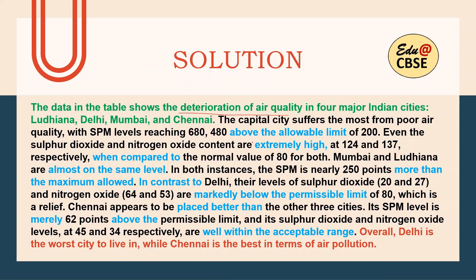Now we come to the body where I'll be comparing and contrasting. As I said, I'll begin from the worst, which is Delhi. Rather than writing 'Delhi,' I'm writing 'the capital city.' The capital city suffers the most from poor air quality with SPM levels reaching 680, which is 480 above the allowable limit of 200. Even the sulfur dioxide and nitrogen dioxide content are extremely high at 124 and 137 respectively, when compared to the normal value of 80 for both. So I have contrasted it with the permissible limit.